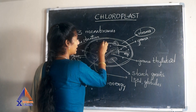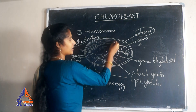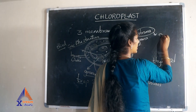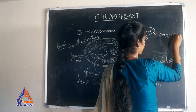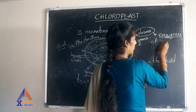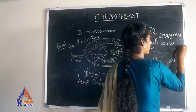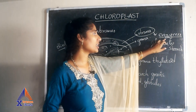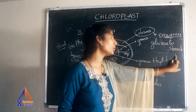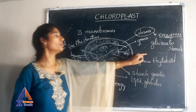Next, stroma. The fluid portion which is present in the chloroplast is called stroma. The function of stroma is producing enzymes. It contains enzymes to convert glucose to starch. The enzymatic activity present in the stroma will convert glucose into starch.